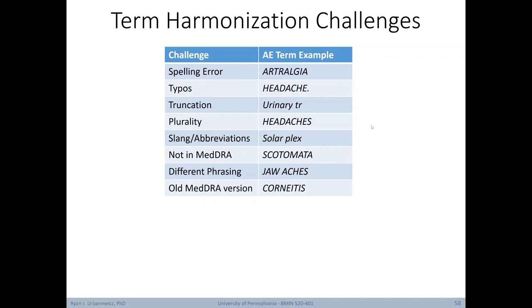However, it turns out that harmonizing terms is extremely challenging for a number of reasons. First off, realize that there's usually human beings manually entering this information as it's collected. As a result, there were spelling errors, typos, truncations of terms, plurality (in other words, headaches instead of just headache), the use of slang or abbreviations, the use of terms that weren't found within MedDRA, different ways of phrasing the same concepts, or the use of terms that were in an older version of MedDRA but not in the most up-to-date one. All of these were barriers in terms of mapping the text variables that we started with in our clinical trials to an ultimately harmonized final dataset that used a terminology standard. At the lowest level of term specification, MedDRA has almost 70,000 unique terms.